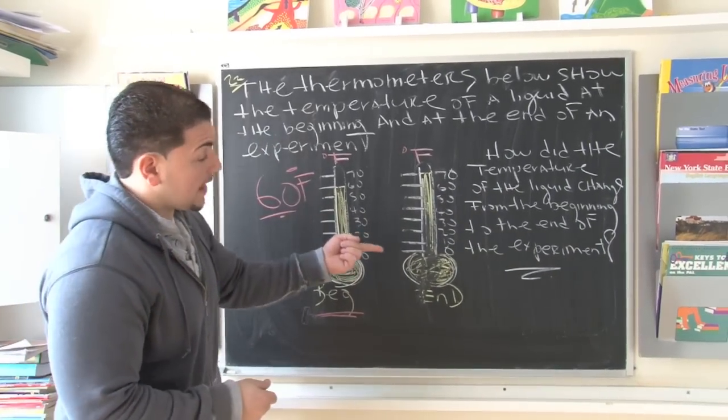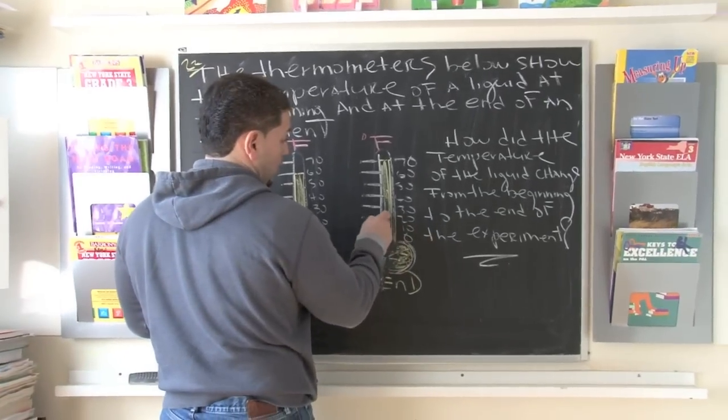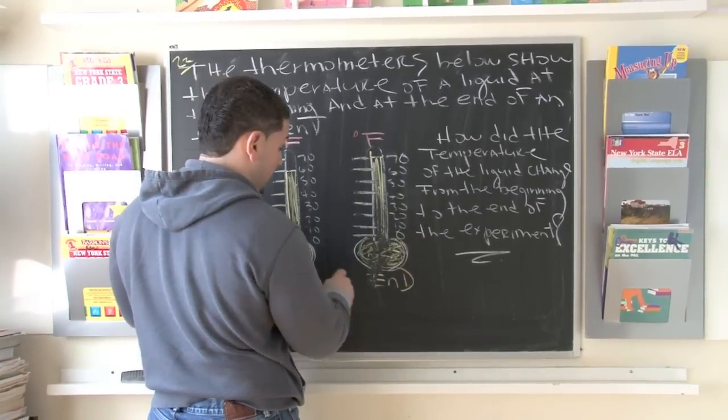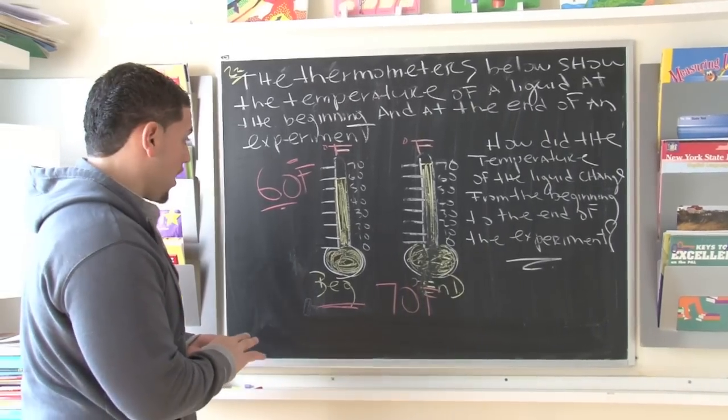Now if we take a look at the next thermometer, this is after the experiment. If we read it, 0, 20, 40, 60, 70, the thermometer shows the temperature of 70 degrees Fahrenheit. So this is what we know about it so far.